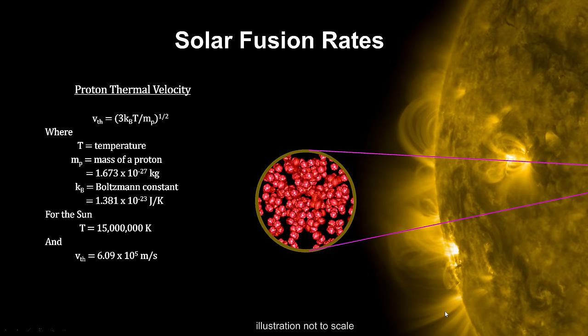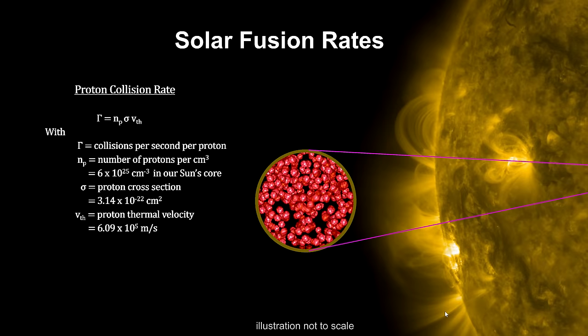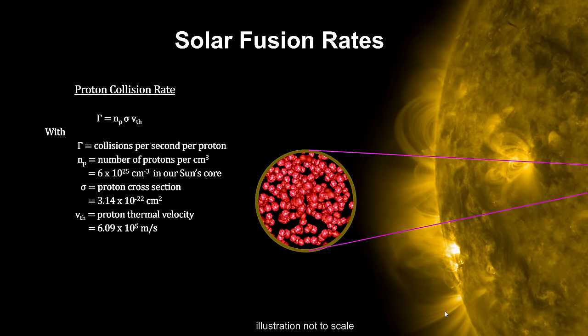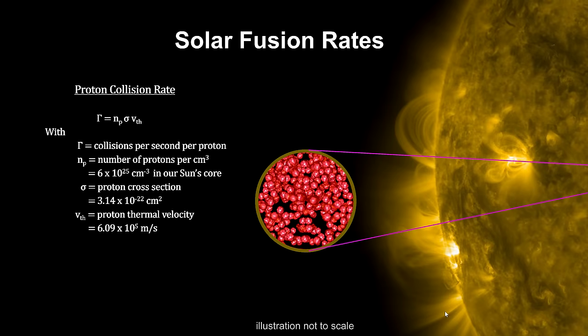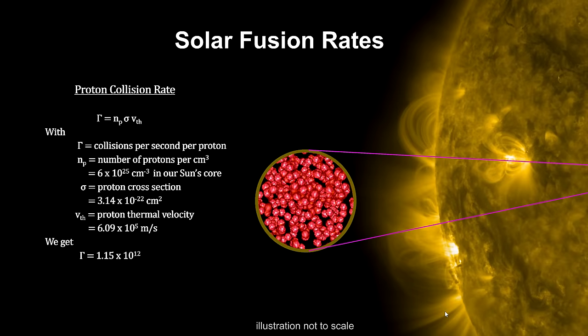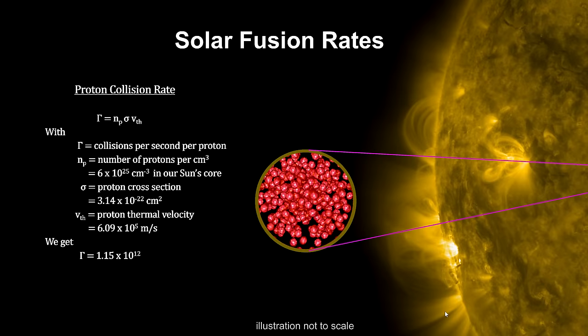With this we can calculate the number of times a proton will collide with another proton. The number depends on the proton density, cross-section, and thermal velocity. We cover cross-section in the How Small Is It video book. It represents the target area for determining a collision versus a miss. We calculate that each proton experiences over one trillion collisions per second.